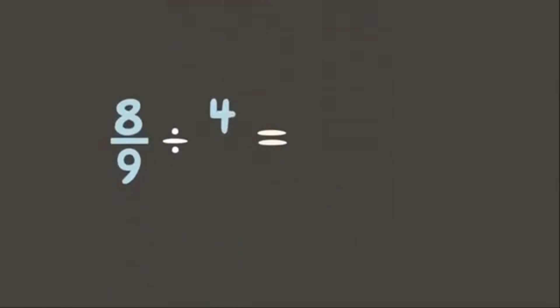How are we going to divide a fraction by a whole number? This is the same as multiplying a fraction by a whole number. First, we put one as the denominator of the whole number, and then get the reciprocal of the divisor.